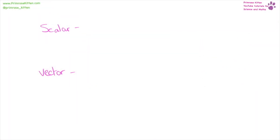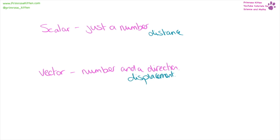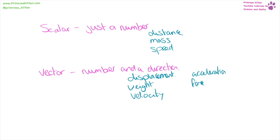A scalar quantity is going to be just a number. A vector quantity is going to be a number and a direction. For example, distance is scalar, but displacement is vector because it's distance in a direction. Mass is scalar, but weight, which is your mass upon the earth, is vector. Speed is scalar, but velocity, which is speed in a certain direction, is vector. Acceleration and force are both vector, and momentum is also vector.